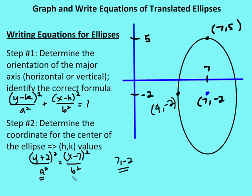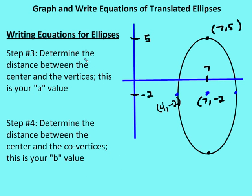To find a squared, I measure the distance from the center to a vertex along the major axis. From (7, −2) to (7, 5) is 7 units vertically, so a equals 7. Then I measure from the center to a co-vertex along the minor axis: from 7 to 4 is 3 units, so b equals 3.